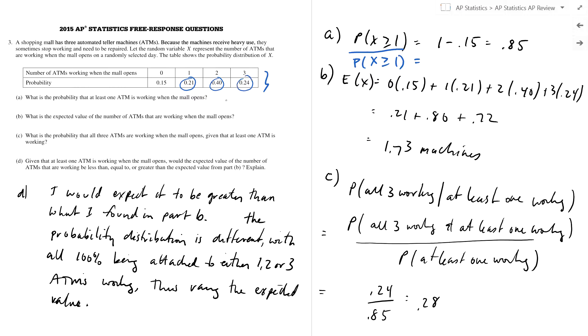So x is greater than or equal to one, that basically means that's that guy plus that guy plus that guy. Or you just do the complement: one minus 0.15 is 0.85. Or you can just add them all: 0.21 plus 0.40 plus 0.24. Point eight five.